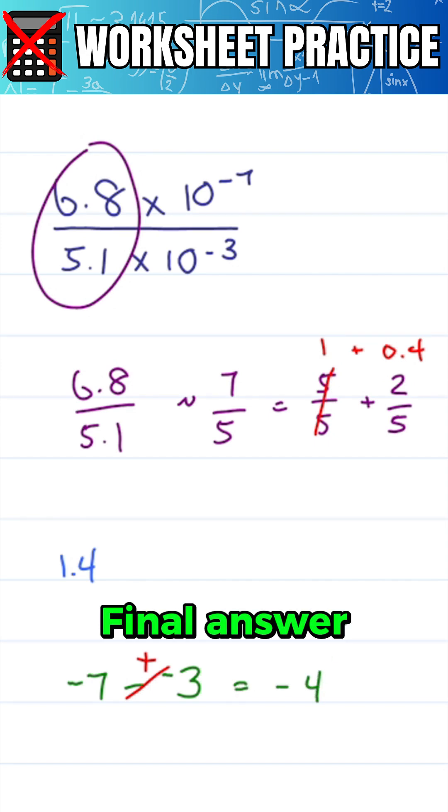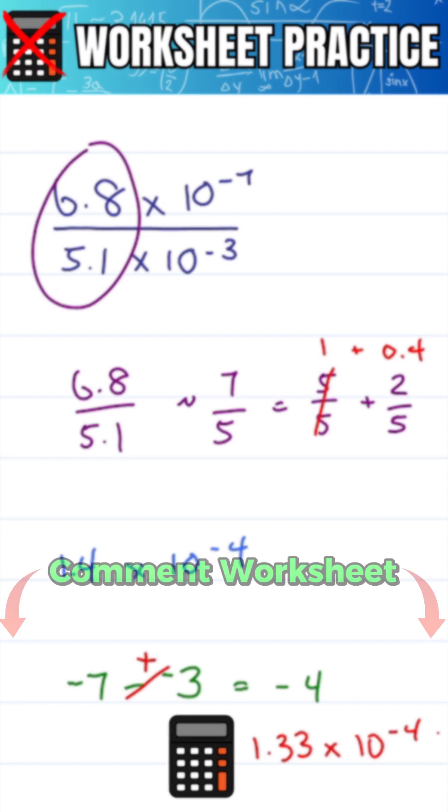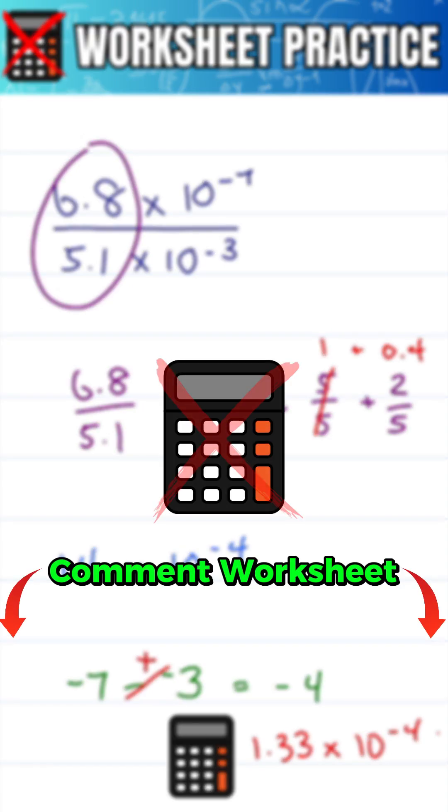For a final answer of 1.4 times 10 to the minus 4. The calculator says 1.33 times 10 to the minus 4, which is close enough. Comment worksheet for dozens more no calculator MCAT math shortcut practice.